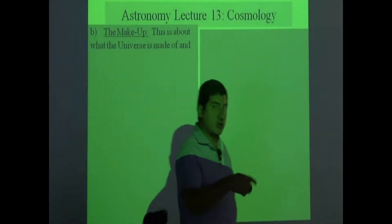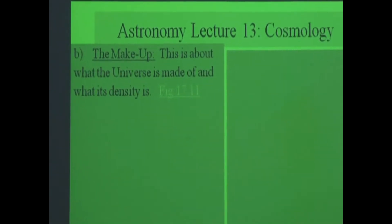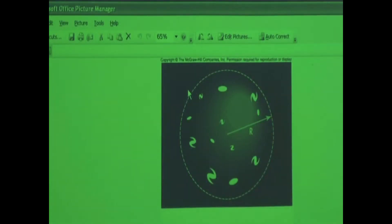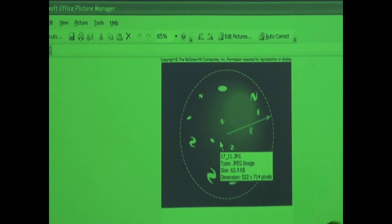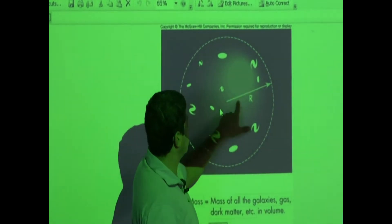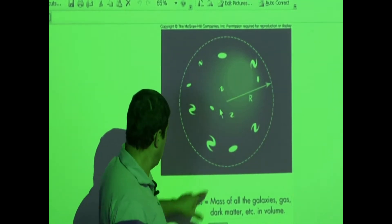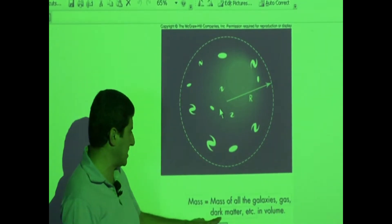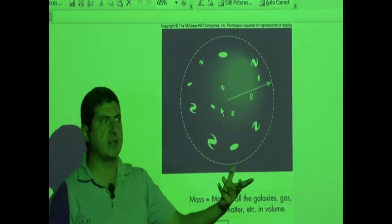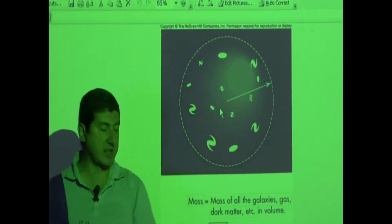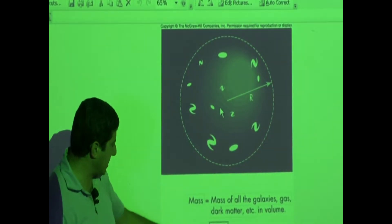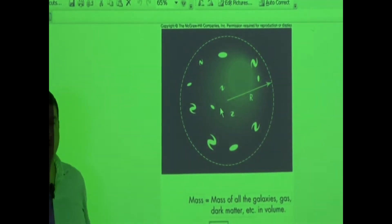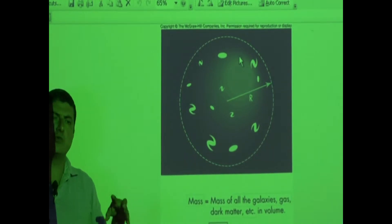This brings us to the question of what the universe is made up of and what its density is. We want to take a certain volume of the universe and estimate the mass of everything in it: the mass of all the galaxies, all the gas, and any dark matter in that space. We can estimate the mass of dark matter by its effects — we can't see it, but we can tell its effects. Then we calculate the volume using 4/3 π r³, and divide mass by volume to find the average density of the universe.